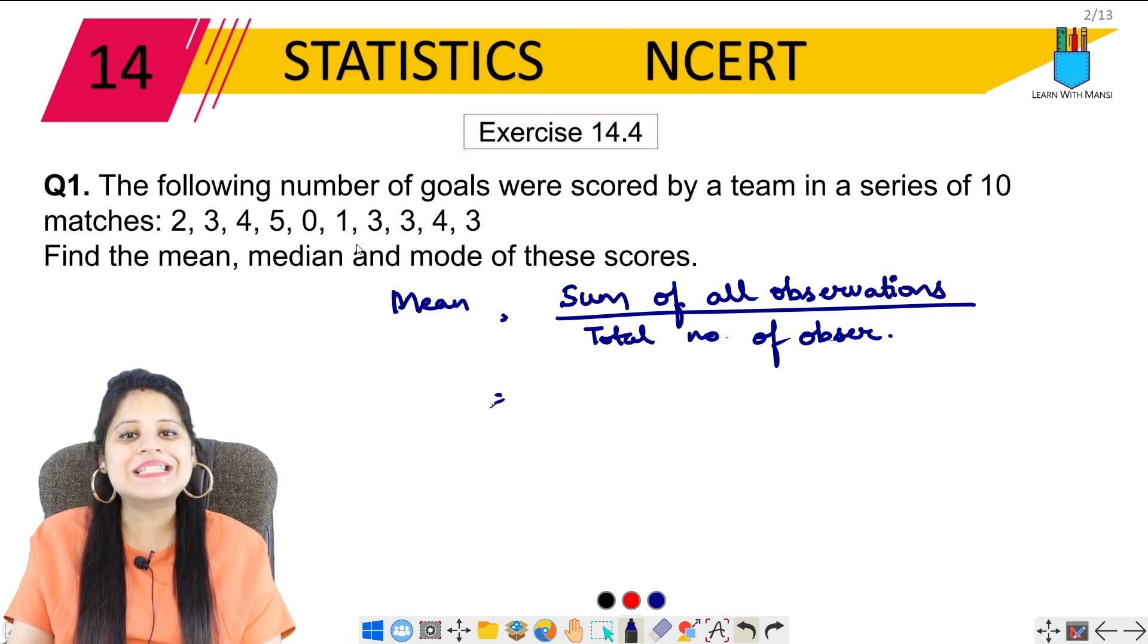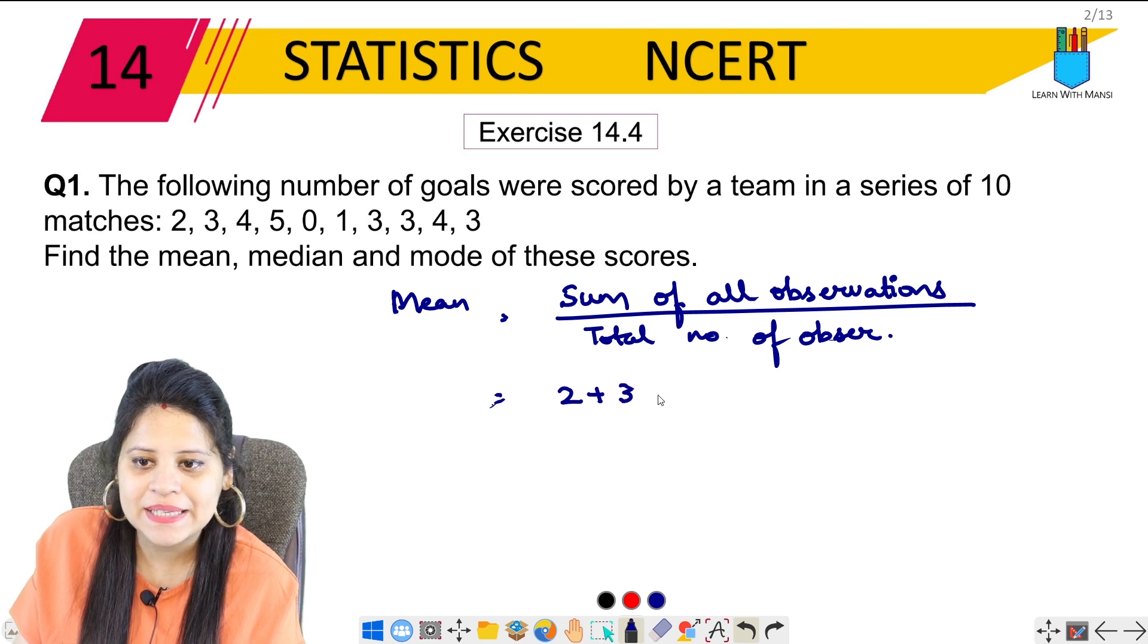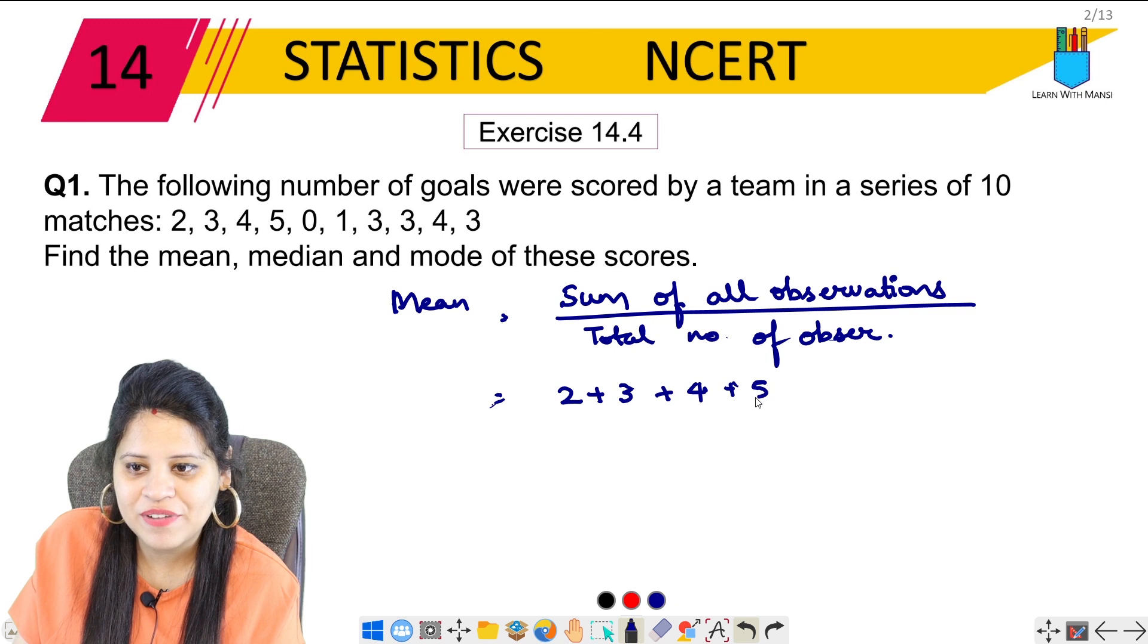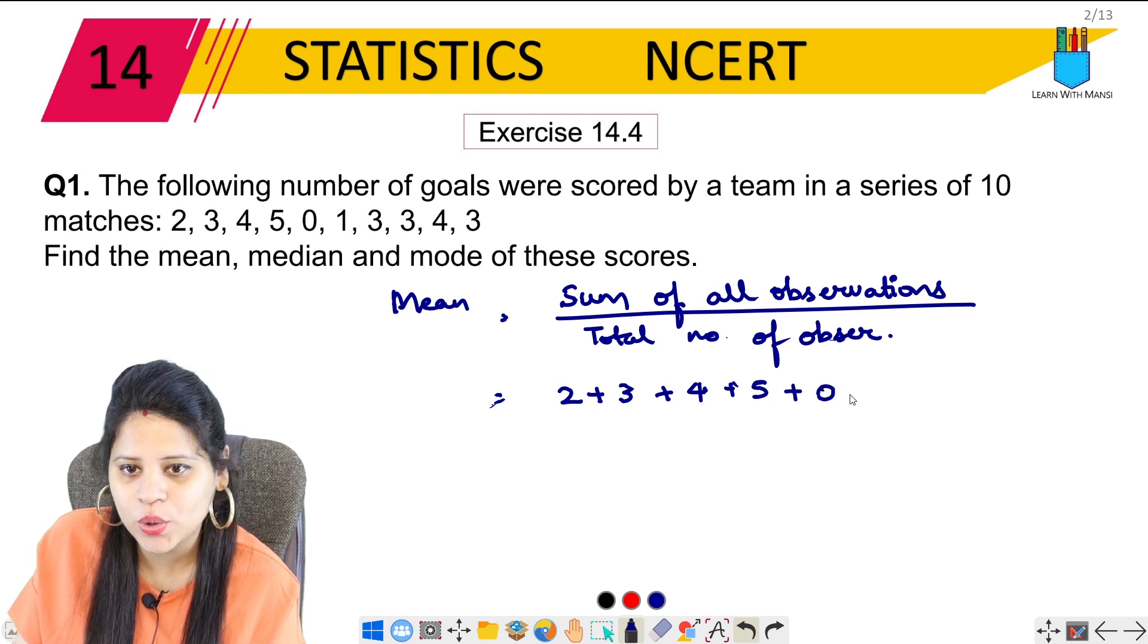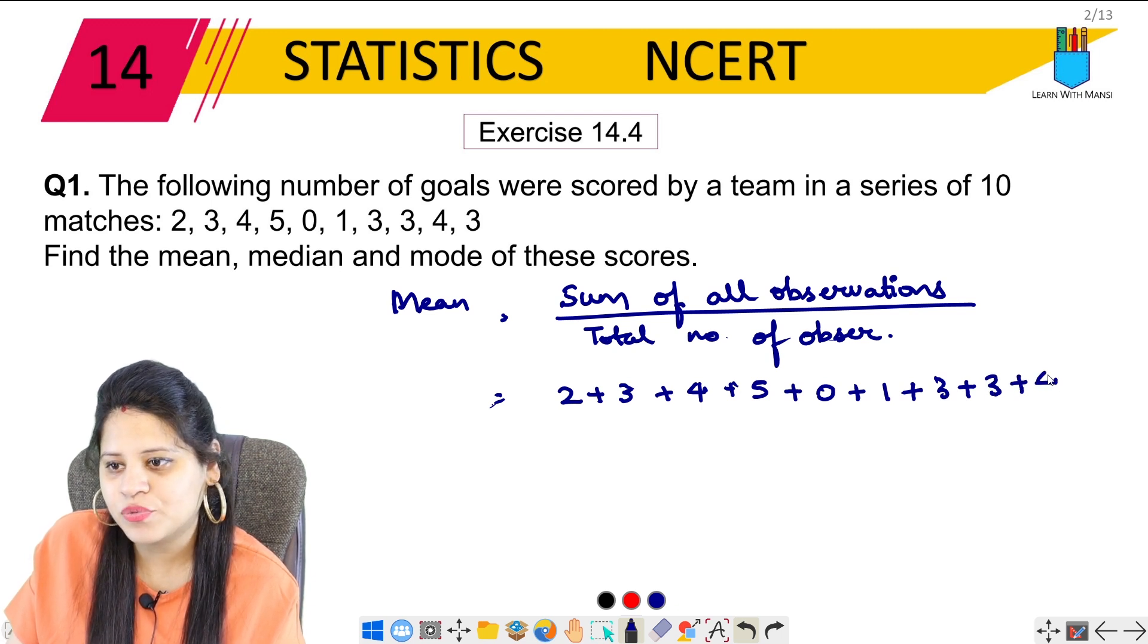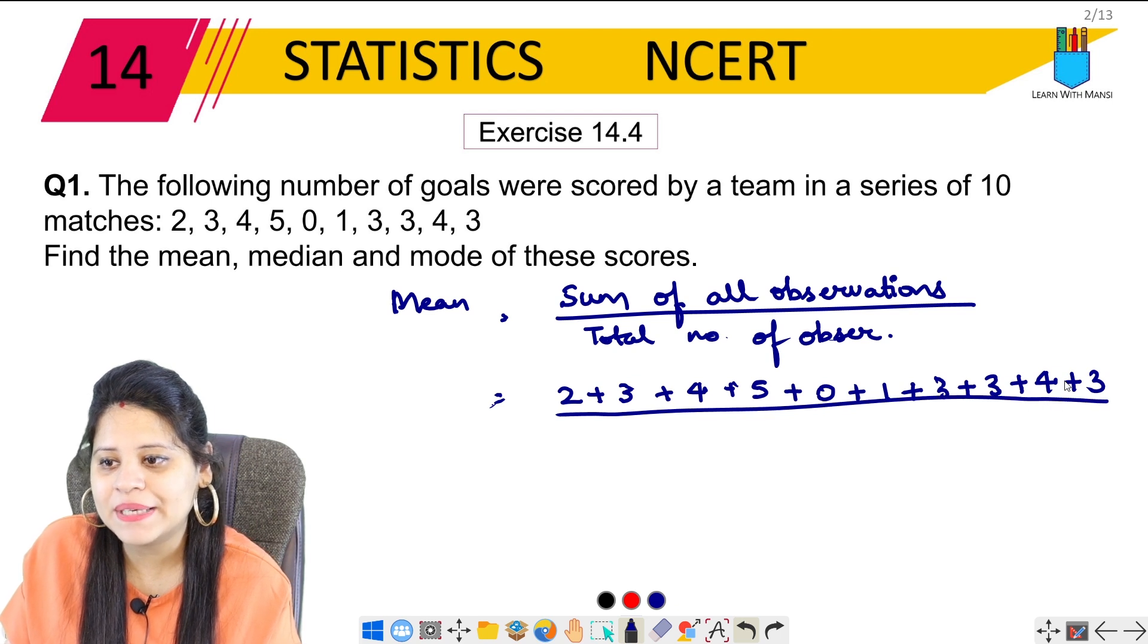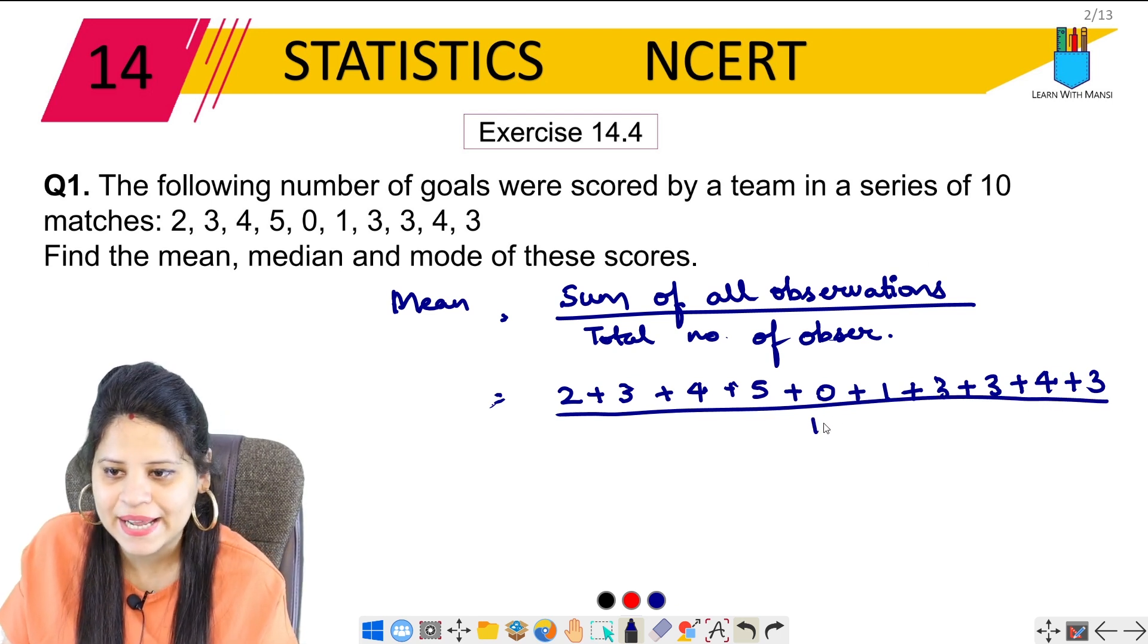So let's start with the sum first. So what do we have? 2 plus 3 plus 4 then we have plus 5 plus 0 plus 1 plus 3 plus 3 plus 4 and plus 3 again. Upon total number is how many? Because the question is given, it's 10. So it's 10.